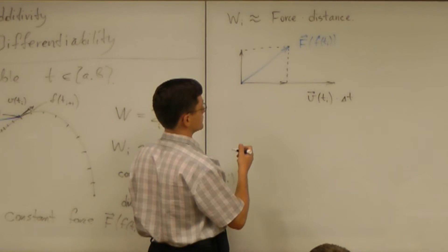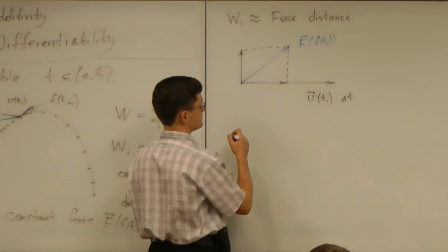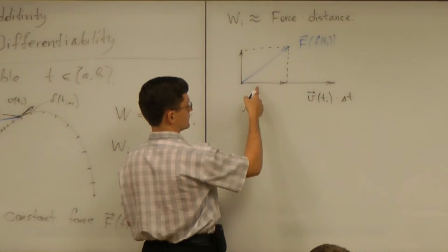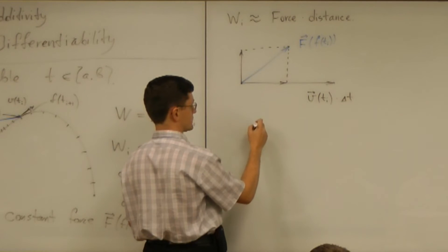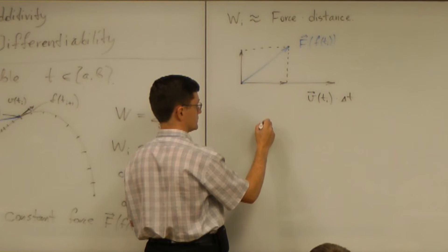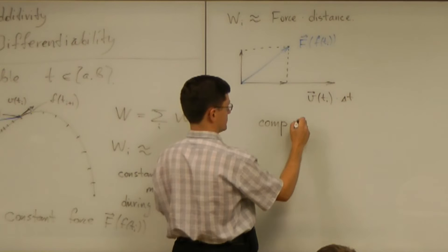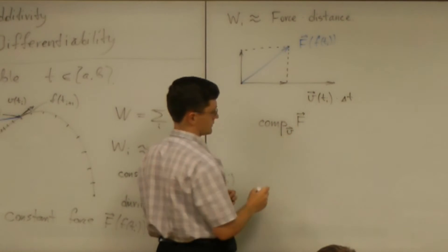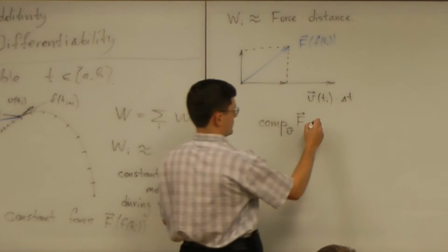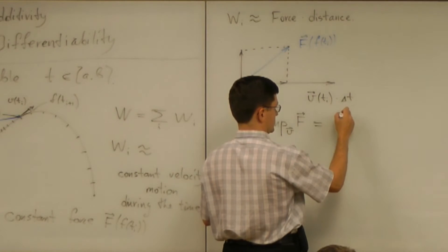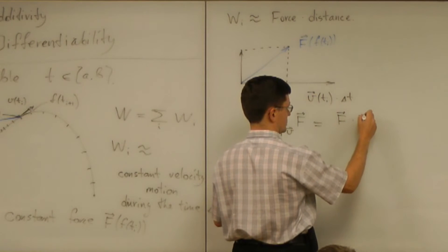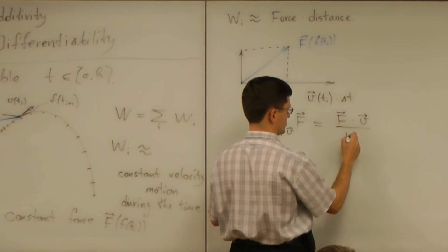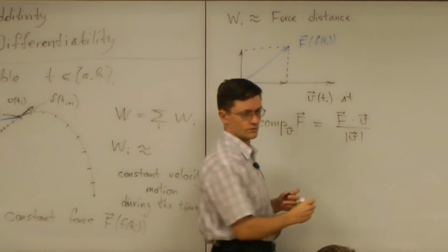So what does that mean? This component is going to be component of the force in the direction of velocity. And that is force dot velocity divided by magnitude of velocity by the speed.